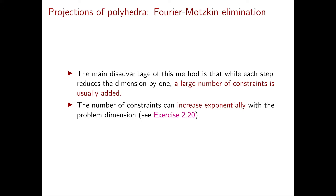This method seems to be very useful because it allows us to check non-emptiness of a polyhedron by checking non-emptiness of a one-dimensional set, which is trivial. So where is the catch? The main disadvantage of this technique is that at every step, while we decrease the dimension by one, a large number of constraints is usually added. In particular, the number of constraints can increase exponentially with the dimension of the problem. If you want to see how this can happen, I suggest that you look into exercise 2.20 in the textbook.